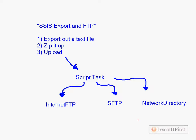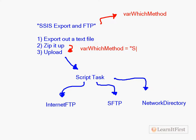In my expression syntax, I would say which one I wanted to use. So up here I might have a variable called 'for which method,' and then coming out of the zip step, I'd have an expression precedence constraint that says if the variable which method equals SFTP, then set the entry point equal to SFTP. This would be one way to have a single script task instead of three script tasks.